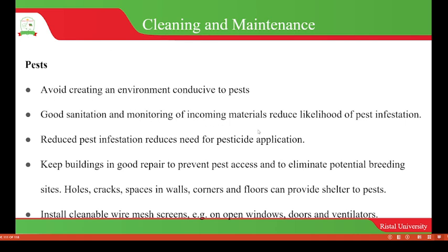Reduced pest infestation reduces the need for pesticide application, which may contaminate food when pesticides get into contact with it. Keep buildings in good repair to prevent pest access and eliminate potential breeding sites, such as holes, cracks, and spaces in walls, corners, and floors which can provide shelter to pests.